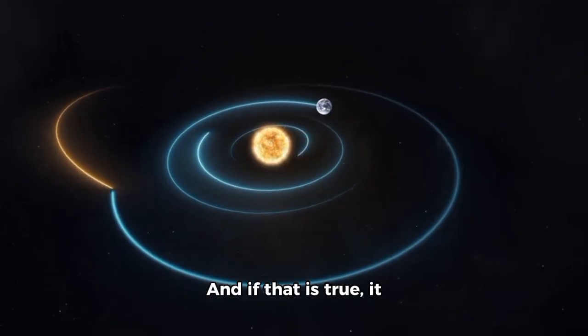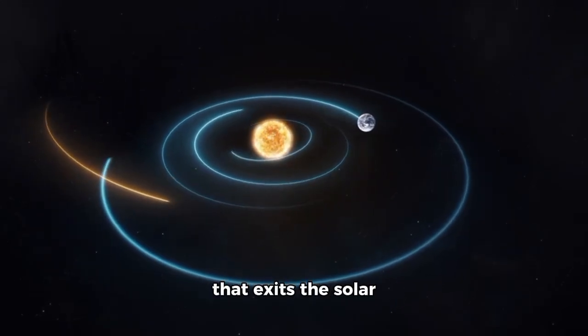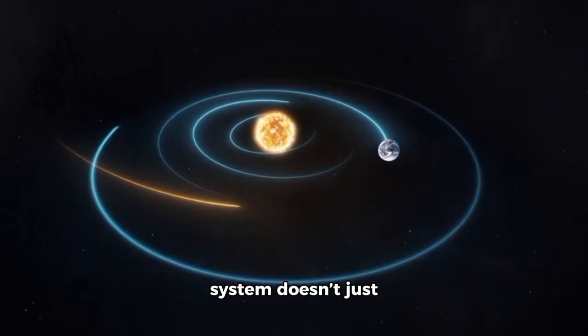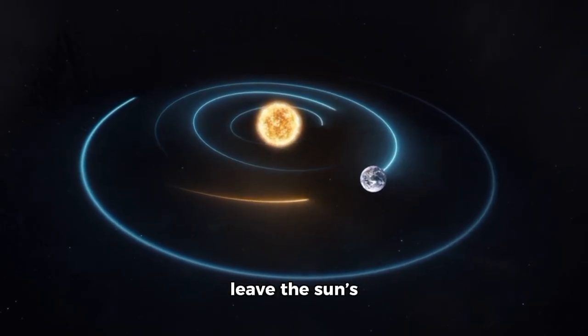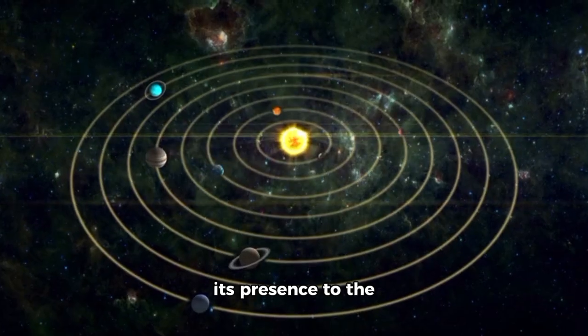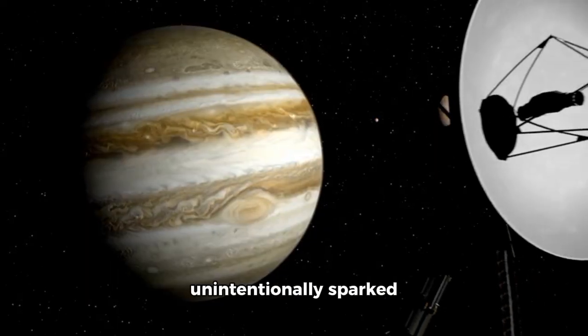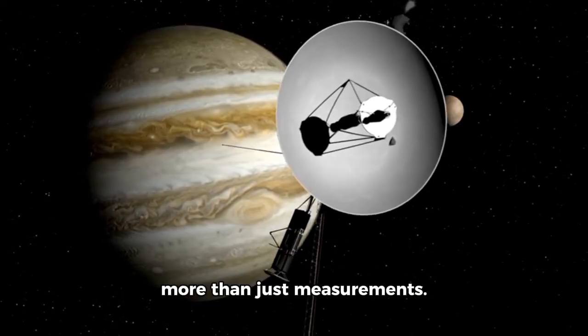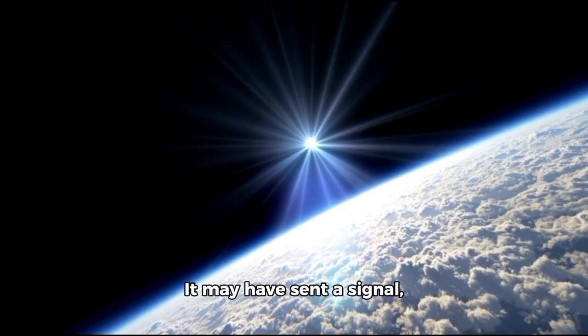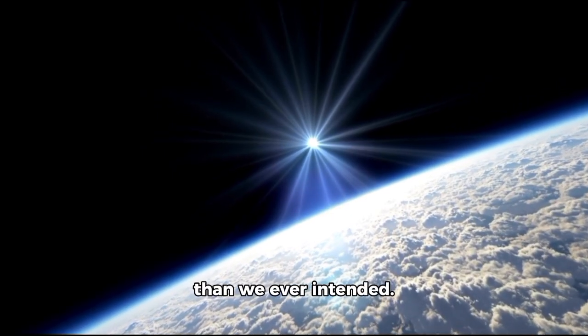And if that is true, it would mean every object that exits the solar system doesn't just leave the sun's territory. It announces its presence to the galaxy beyond. Voyager 2 may have unintentionally sparked more than just measurements. It may have sent a signal, revealing more about us than we ever intended.